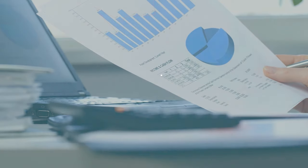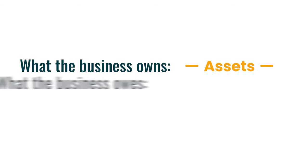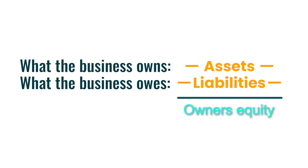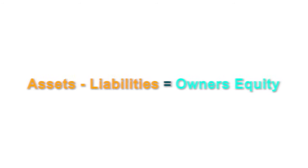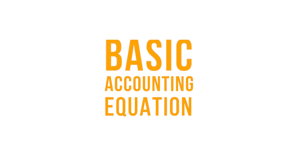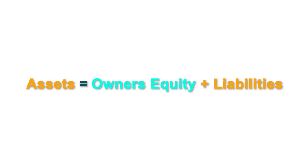The Balance Sheet shows what the business owns — which is assets — what they owe — or liabilities — and the difference between assets and liabilities is known as equity or owner's equity. Written as an equation: assets minus liabilities equals owner's equity. However, since we usually work with positive amounts in accounting, the basic accounting equation is written as: assets equals owner's equity plus liabilities.